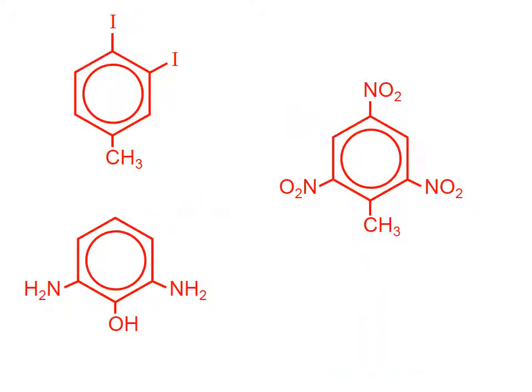Now we have some structures and we need to write the names. This is clearly a toluene molecule, and it has two iodo substituents, so we want to say diiodo. We need to specify where those iodo substituents are. By definition, the carbon to which the CH3 group is attached is carbon number one — it's the carbon in the ring that the CH3 group is attached to. We want to get to the iodo substituents as quickly as we can, so let's number counterclockwise: carbon one, two, three, four. So this is 3,4-diiodotoluene.